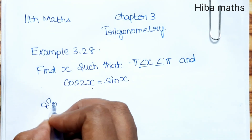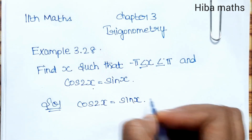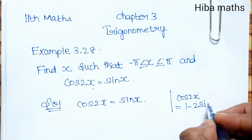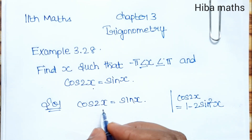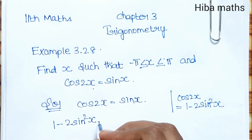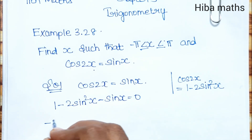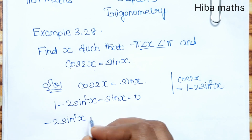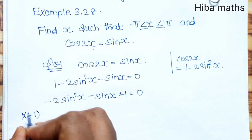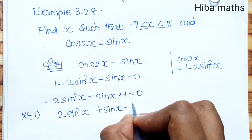Solution: Given cos2x is equal to sinx. Now cos2x is equal to 1 minus 2sin²x. So substituting: 1 minus 2sin²x plus sinx equals 0, which gives minus 2sin²x minus sinx plus 1 equals 0.